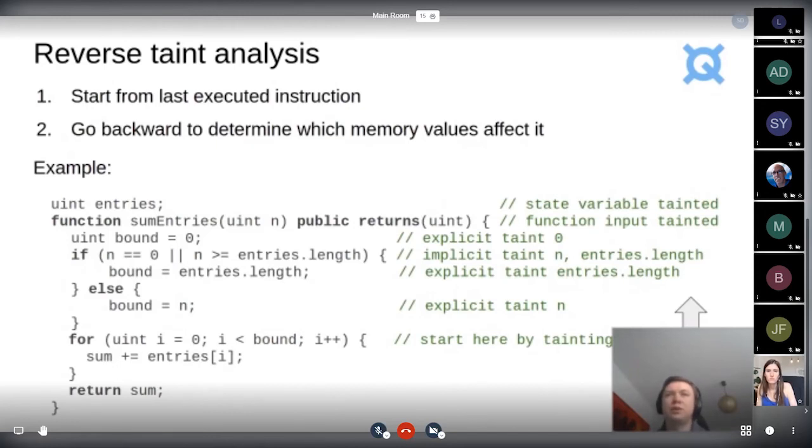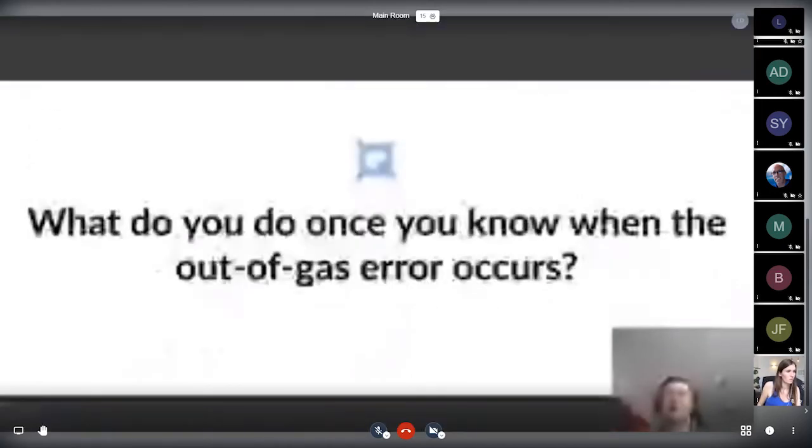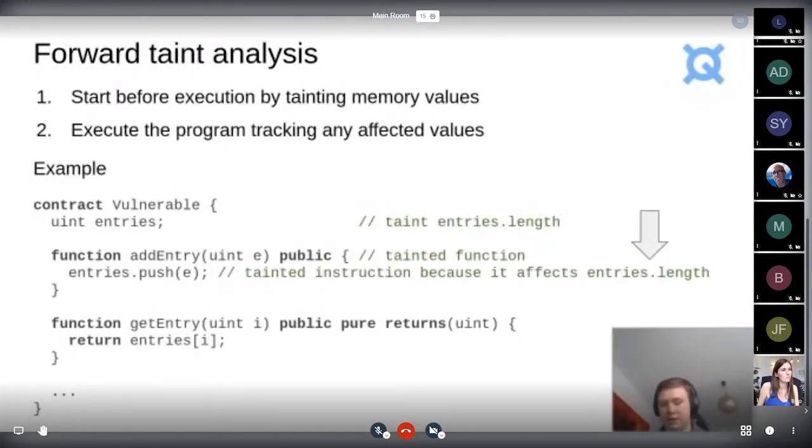So once we determine this, we can do a forward taint analysis where we just taint the entries.length. And we start executing each function to see which instructions in which function may affect the entries length. And we see that only the add entry function affects the length of the entries list. The get entries function does not. Therefore the reinforcement learning agent can just try to call this function before it tries to see if it ran out of gas using that sum entries function, which is not shown here due to lack of space.